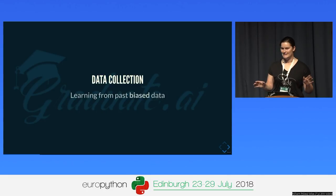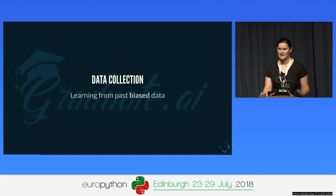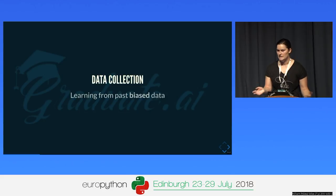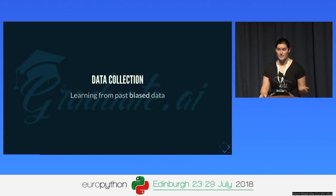You might say: just remove all gender and protected attributes from the dataset. But these attributes are most often redundantly encoded. For example, which studies you choose, whether you go to university or not, is strongly dependent on your social class — and your social class is also correlated with which high school you attended, which options you chose, which language you learned. So it's not that easy.